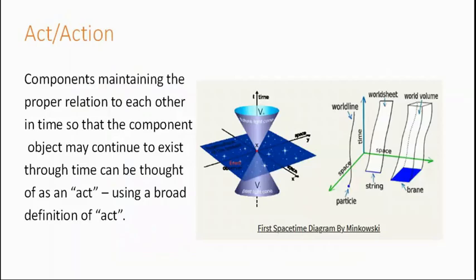So the act of holding my hand in the shape of the fist creates the fist. And so we could think of the act of the components staying in proper relation as the component moves through time. So we could think of a table as an act. The act of the four legs and the table top, the five components, keeping the same relation to each other as the table moves through time. We could consider that an action.